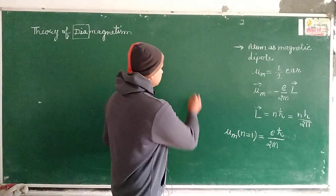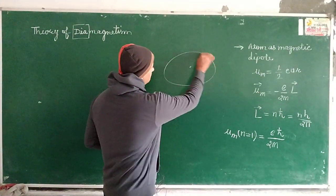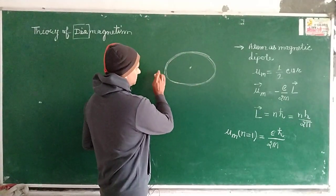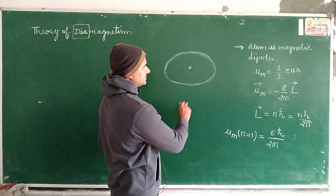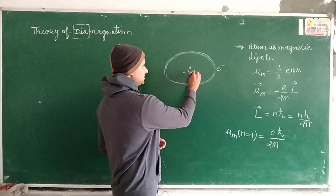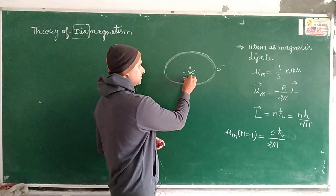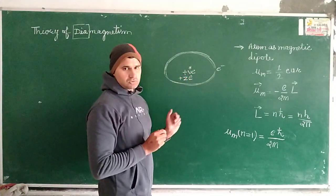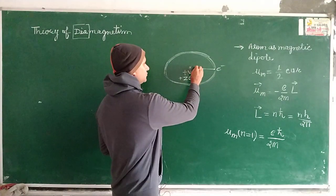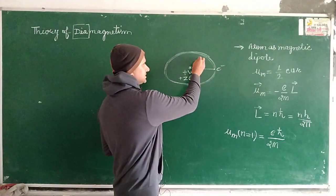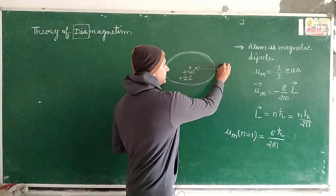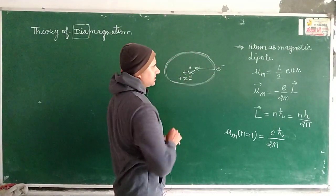Before that, you must have a clear idea that electrons revolve around the nucleus. An electron is a negatively charged particle under the effect of Coulombic attraction. If z is the atomic number, then ze plus ze will be the charge on the nucleus, and this electron revolves under this attractive force, which acts as centripetal force.